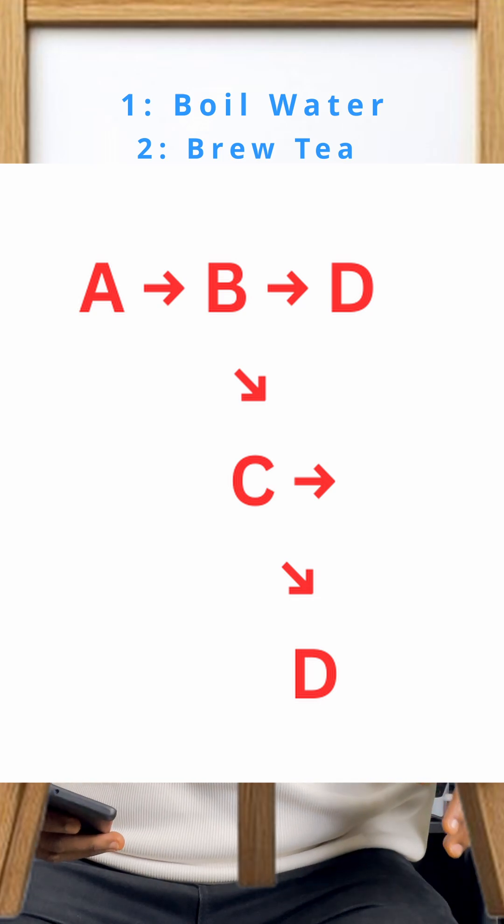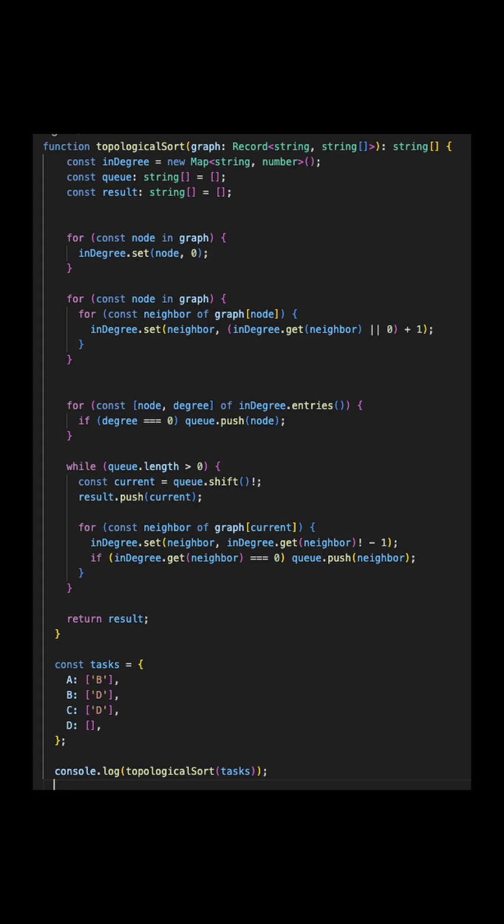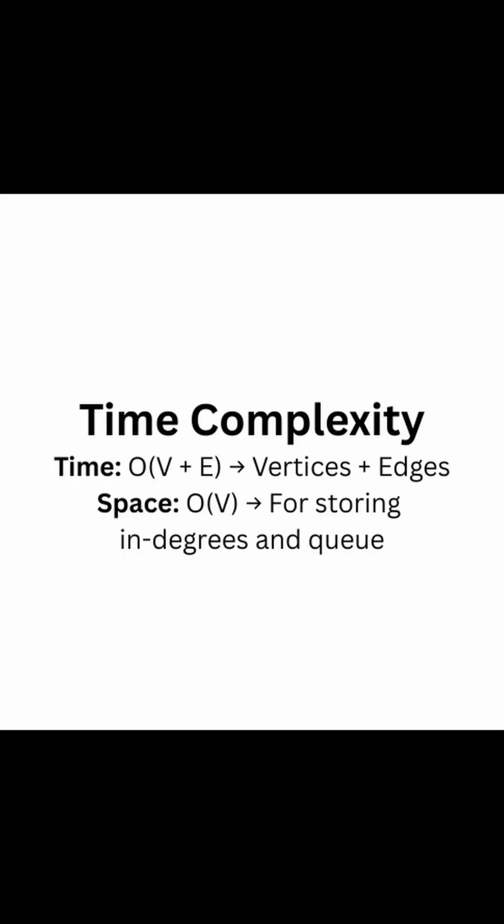Now let me show you some code. The time complexity is shown here on this screen — time for vertices and edges, and space for storing in-degrees and the queue.